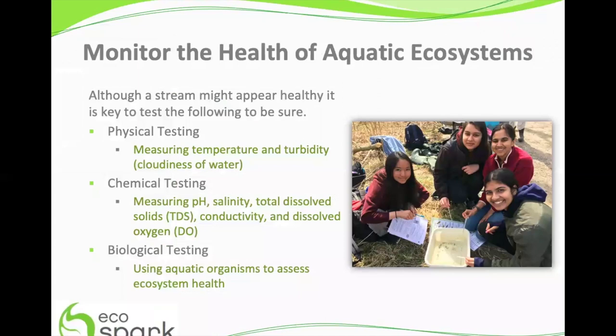It is important to monitor the health of our aquatic ecosystems. Sometimes it's not easy to tell whether or not a water body is polluted by the way it looks or smells. That's why we need to use physical, chemical, and biological tests to assess water quality. Even though a stream might appear healthy by the way it looks or unhealthy by the way it smells, we still need to do additional tests in order to be sure.